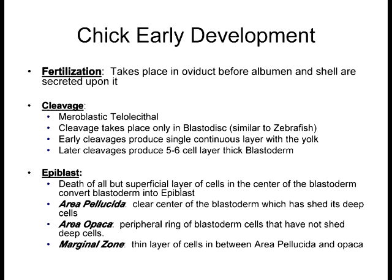Here's one of the key things: fertilization occurs before the egg is laid. The hen and the rooster have to mate first, because as soon as the hen creates the calcium shell around the egg, it can no longer be fertilized. Fertilization has to occur first, and then the actual egg — albumin and calcium shell — starts forming around it. So fertilization occurs internally.